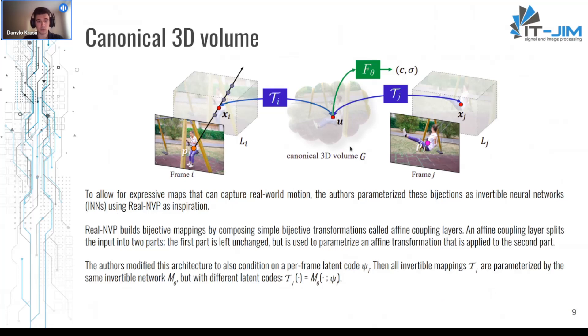A continuous bijective mapping T_i is defined that maps 3D points from each local coordinate frame to the canonical 3D coordinate frame. These mappings are parameterized as invertible neural networks and ensure that the resulting correspondences between 3D points in individual frames are all cycle consistent.